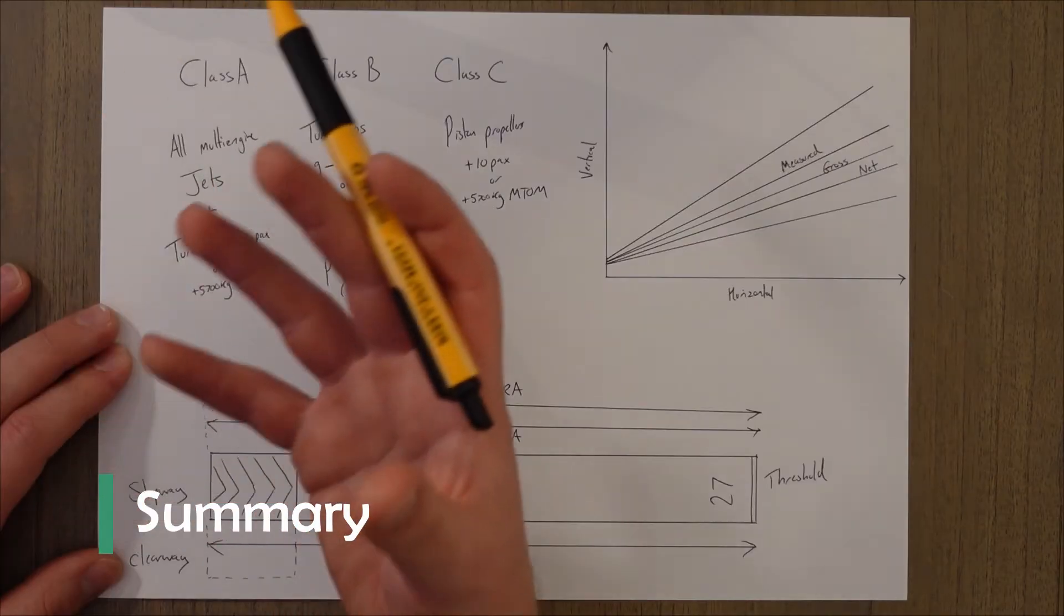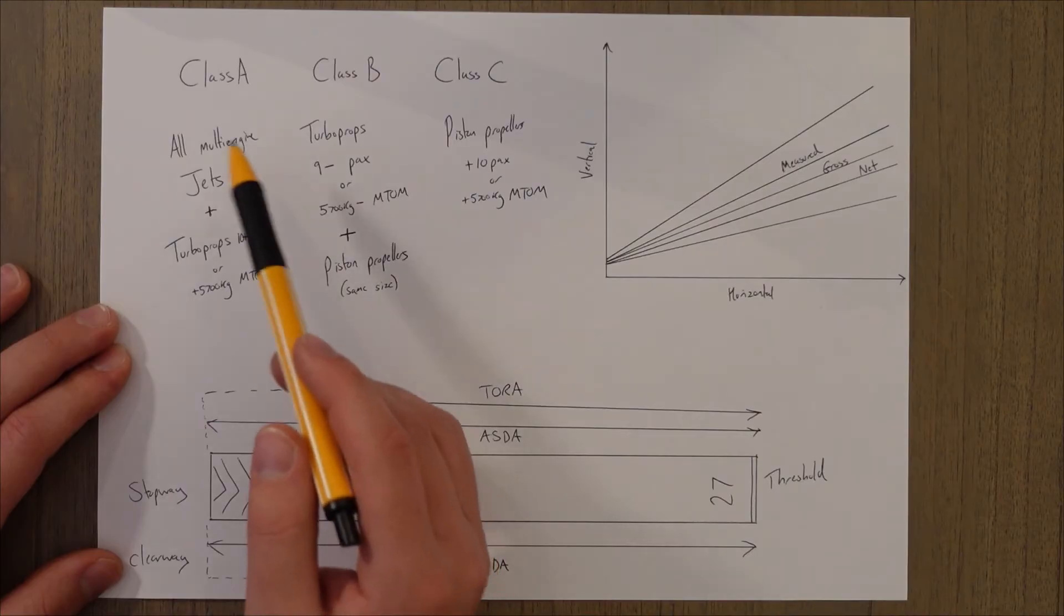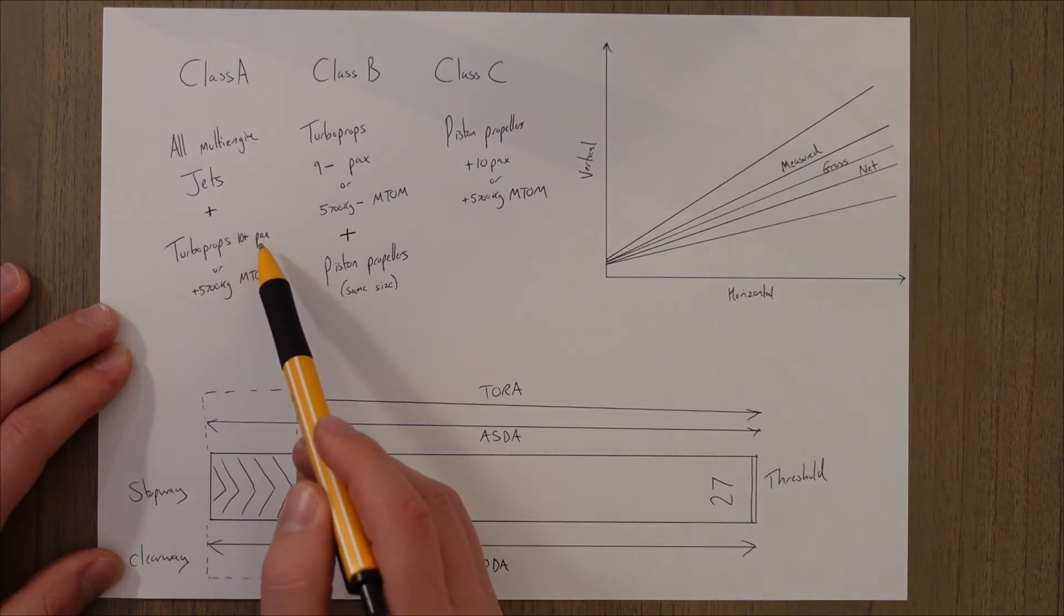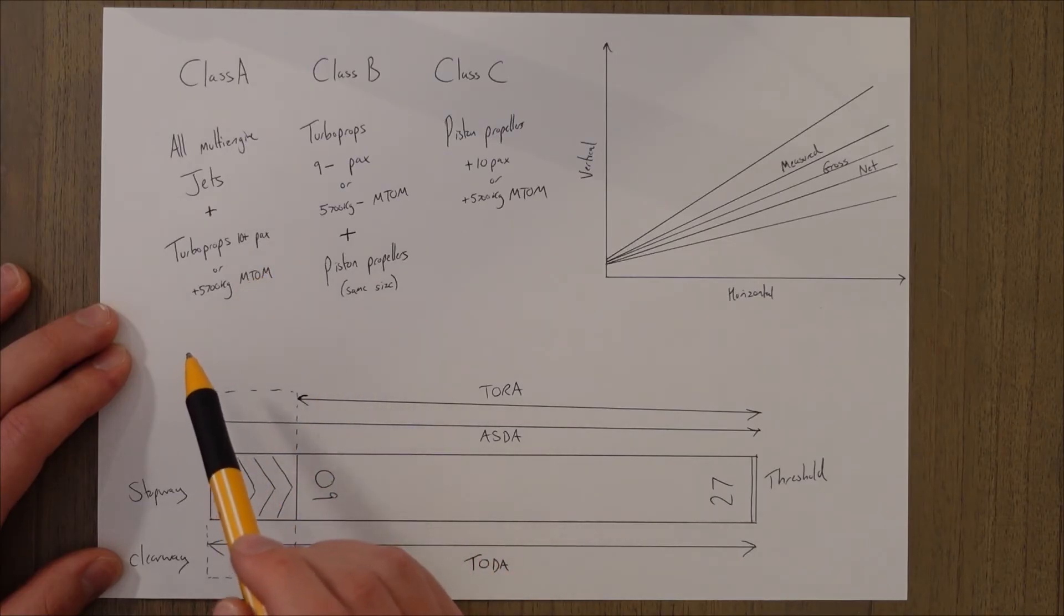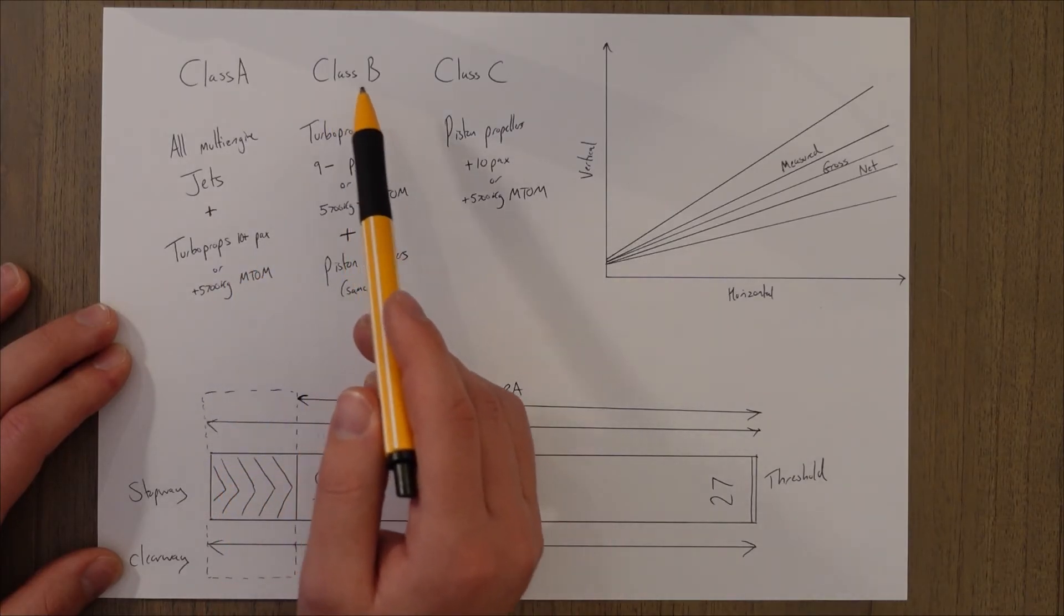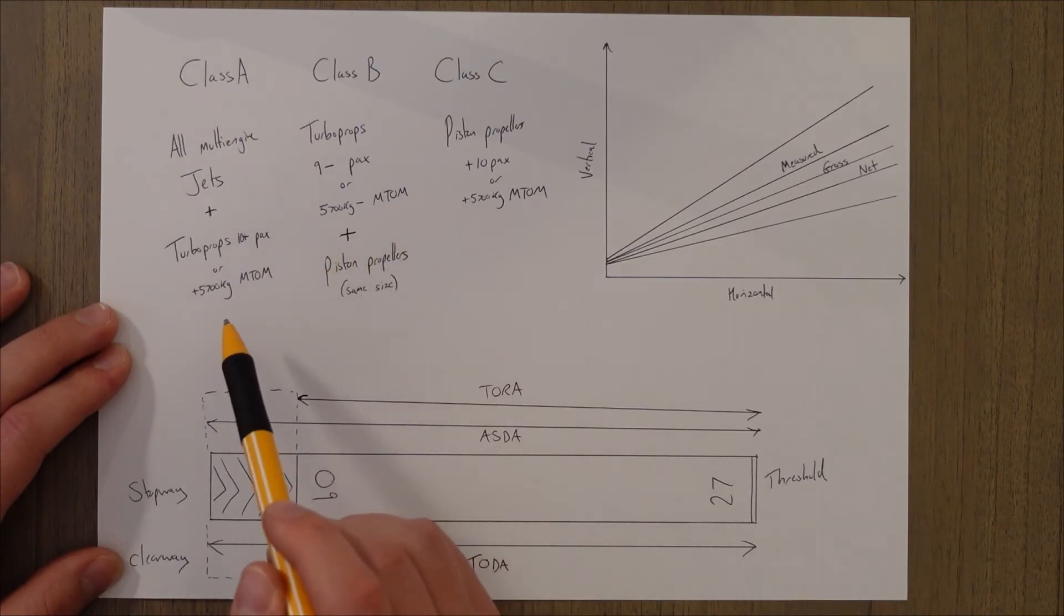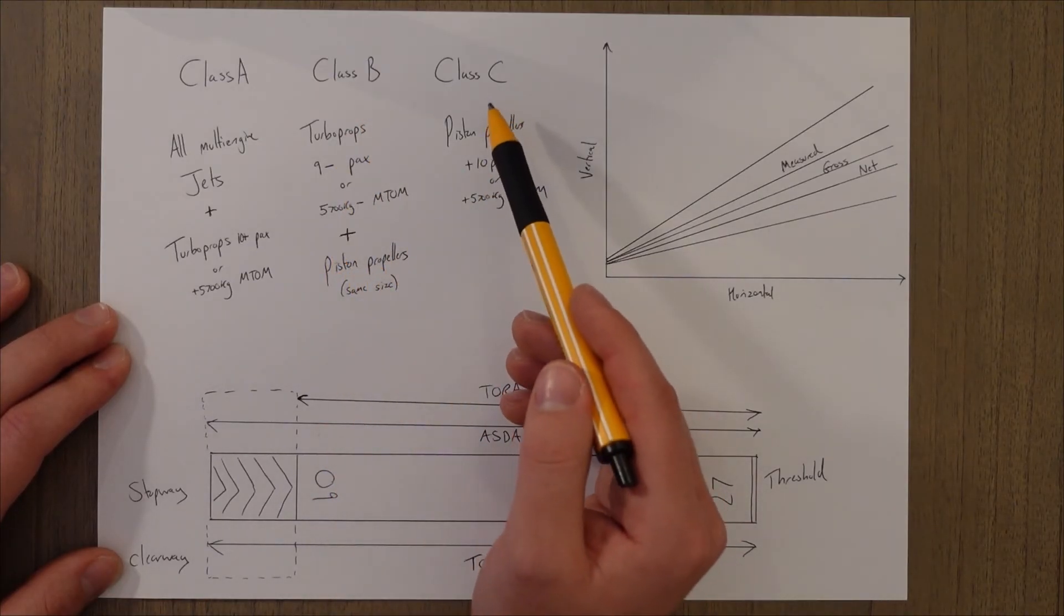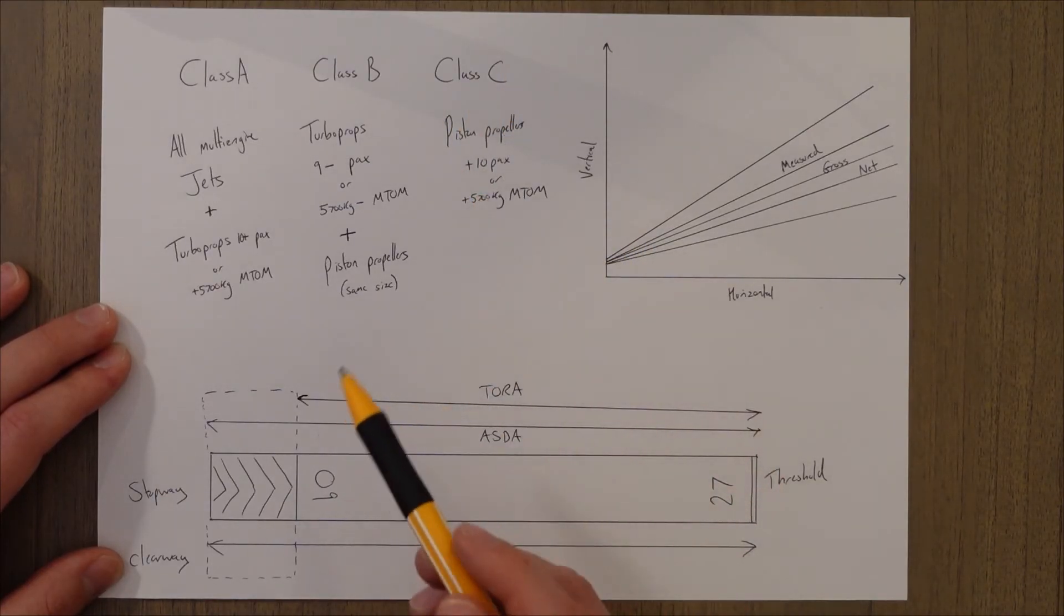So aircraft are certified to fly following certain performance rules. There's Class A, Class B, and Class C. Class A covers all multi-engine jet aircraft, and it also covers turboprops that have more than 10 passenger seats and weigh more than 5700 kilograms at their maximum takeoff mass. Class B is for turboprops that are smaller than this, so nine or less passenger seats and less than 5700 kilograms maximum takeoff mass, and any piston propeller aircraft of the same size. And then there's Class C, which covers the large piston propeller aircraft, not really seen today, so not really covered in the ATPLs.